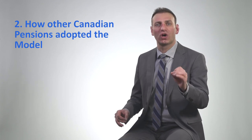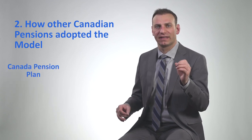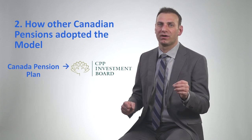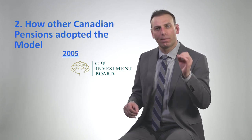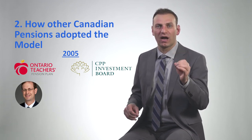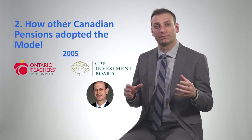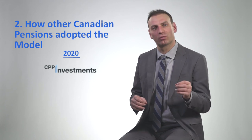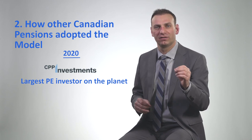Let's look at how one pension adopted the Canadian pension model. For this, we'll look at the largest pension in Canada, the Canada Pension Plan, which has the investment arm called the Canada Pension Plan Investment Board — CPPIB. In 2005, CPPIB poached Mark Wiseman from the Ontario Teachers' Pension Plan. Wiseman led the private equity program at Teachers' and was brought to CPPIB to build its private equity program. Here we are in 2020, and CPPIB currently is the largest investor in private equity on the planet.